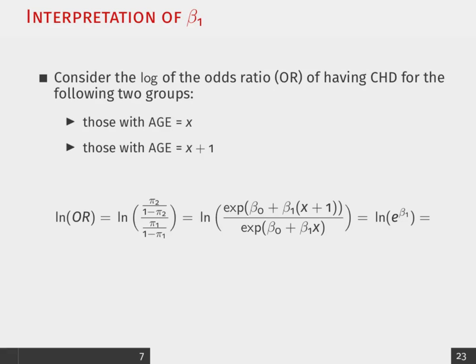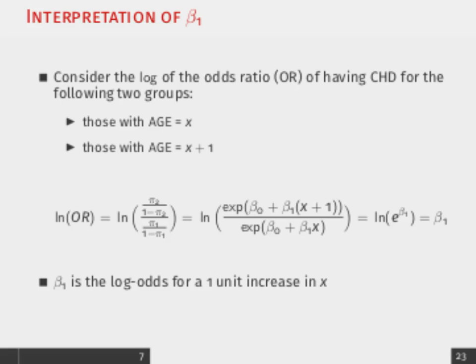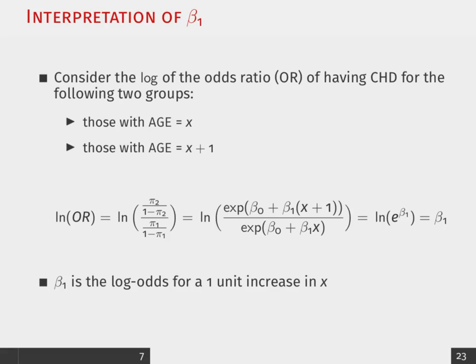And so, we can re-express it like this. So, again, when we think of how to interpret this beta 1, a 1 unit increase in x is equivalent to that beta 1 increase in the log odds of having CHD.